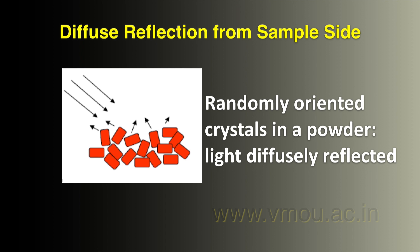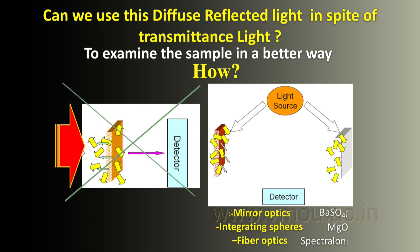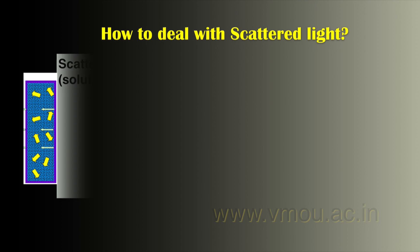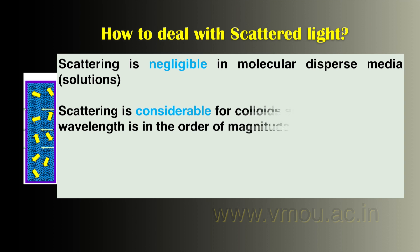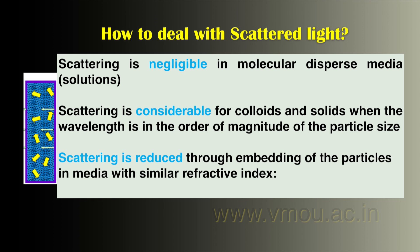This is the diffuse reflectance sample slide, where crystals in a powder are lightly diffused. The first approach uses the sample directly in solution or gas form, but it is not used for solid cases. Therefore, the second technique uses a white reference sample alongside the analysis sample; we subtract the reference material's absorbance and then obtain the sample's analysis. Scattered light is negligible in molecularly dispersed media, but scattering is significant for colloidal or solid materials when wavelength is on the order of particle size. Scattering can be reduced by embedding particles in media with a similar refractive index, using barium sulfate or magnesium oxide as reference materials.